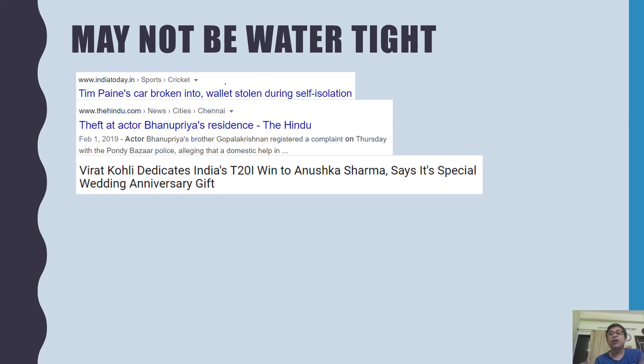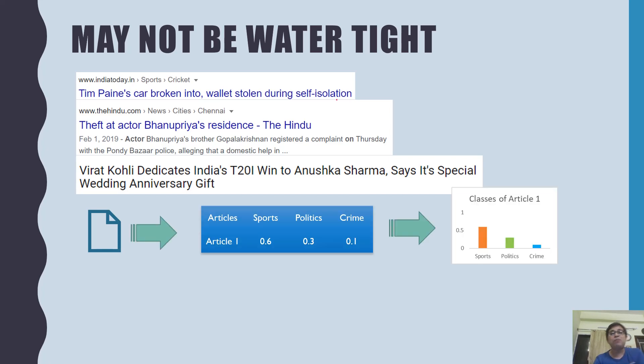This can potentially go to both entertainment and crime and should actually go to both. Another news where it is about a prominent cricketer whose wife also happens to be a top actor. Any news about them will be an entertainment news as well as a sports news. So our conventional thinking of multi-class classification is challenged here, right? Here an article can belong to multiple categories with different probability, which we can visualize like this.